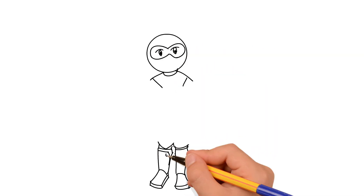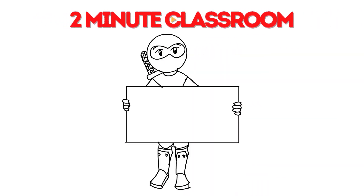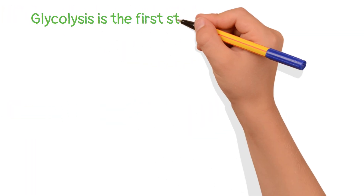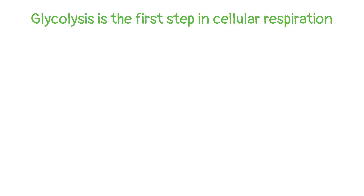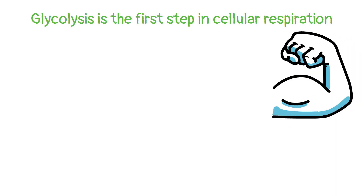Thanks for stopping by. This is 2 Minute Classroom, and today we're talking about glycolysis. Glycolysis is the first step in cellular respiration, the process that ultimately produces the majority of your body's energy.